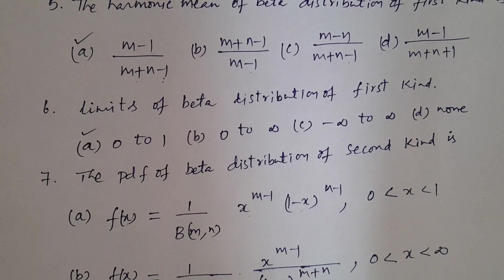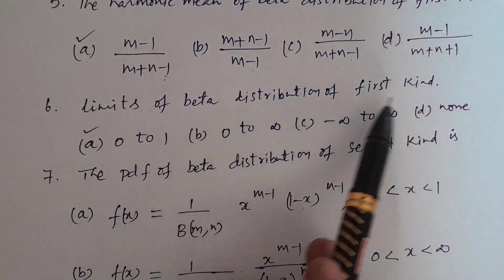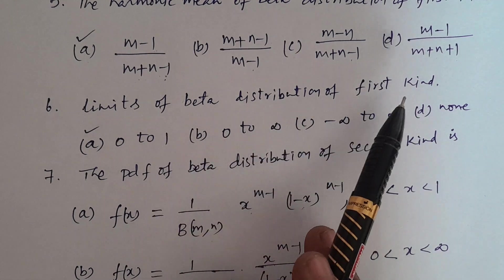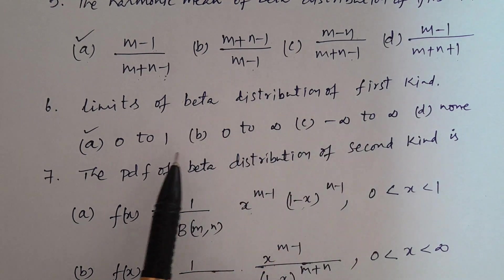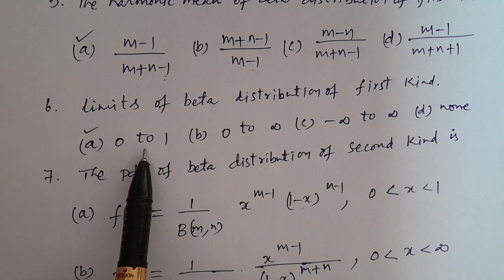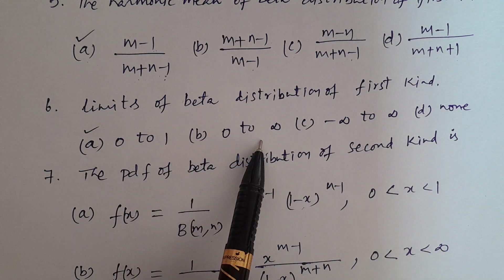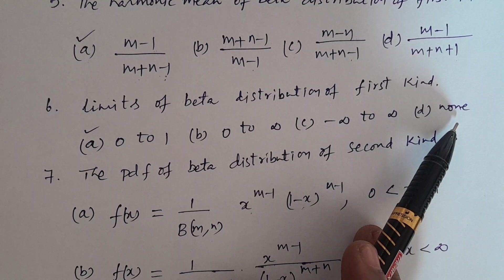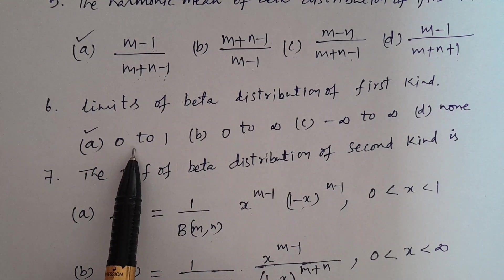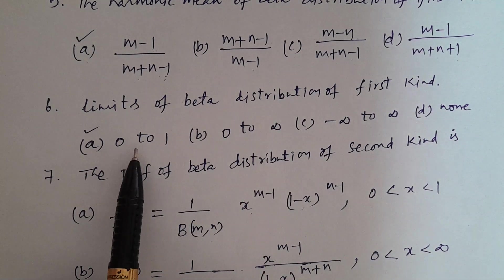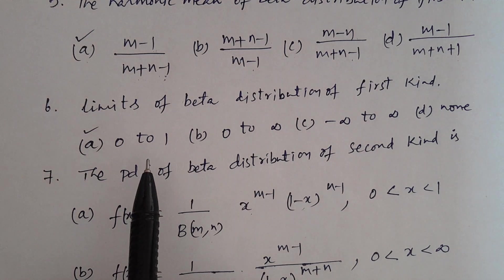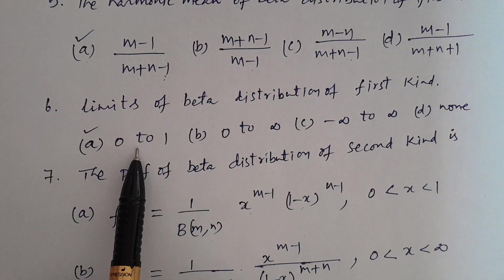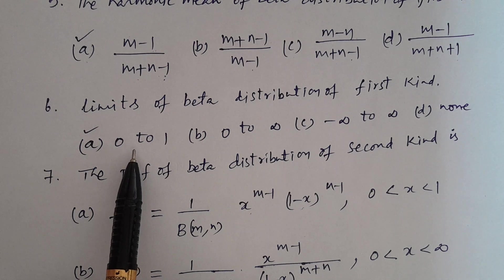Question number 6: The limits of beta distribution of first kind. Options: A — 0 to 1; B — 0 to infinity; C — minus infinity to infinity; D — none. Correct answer is 0 to 1. Limits of beta distribution of first kind are 0 to 1; second kind are 0 to infinity. Answer is Option A, 0 to 1.